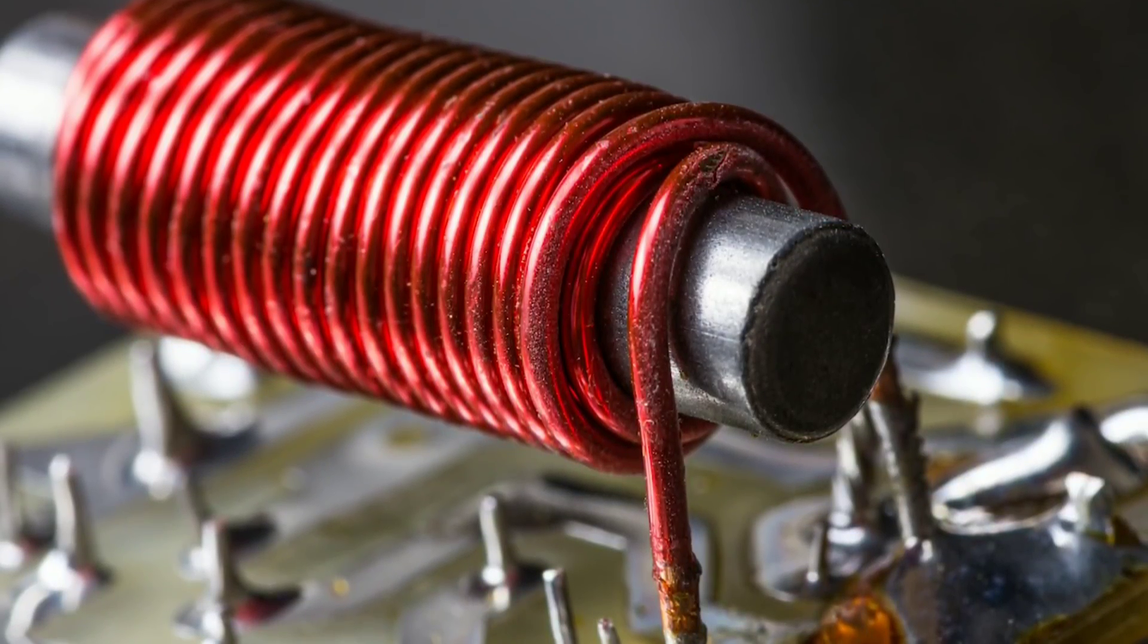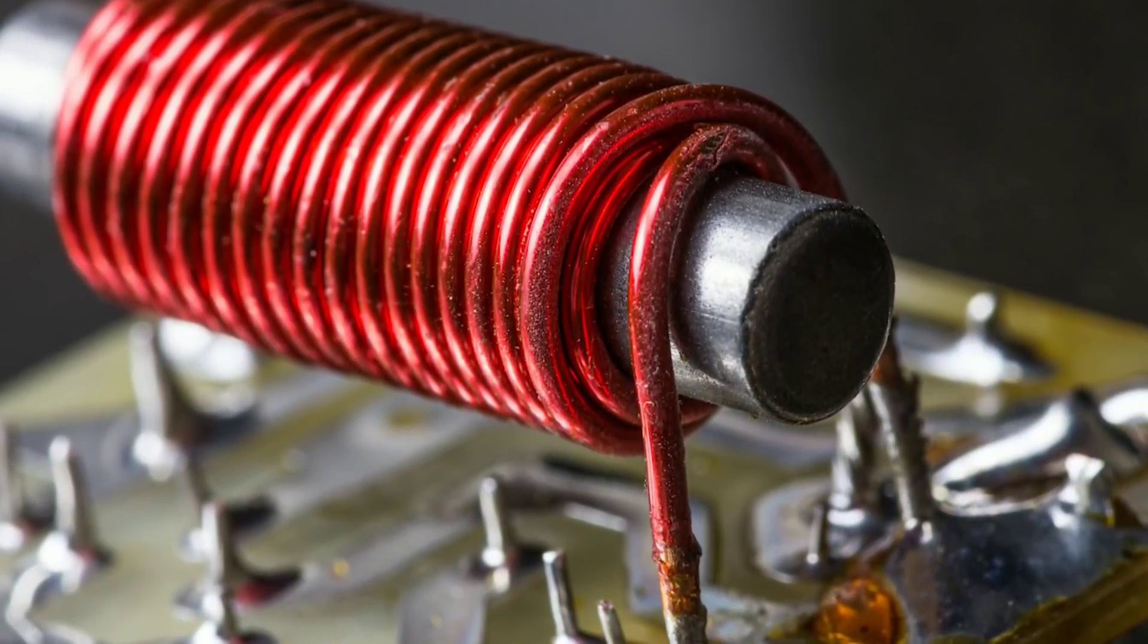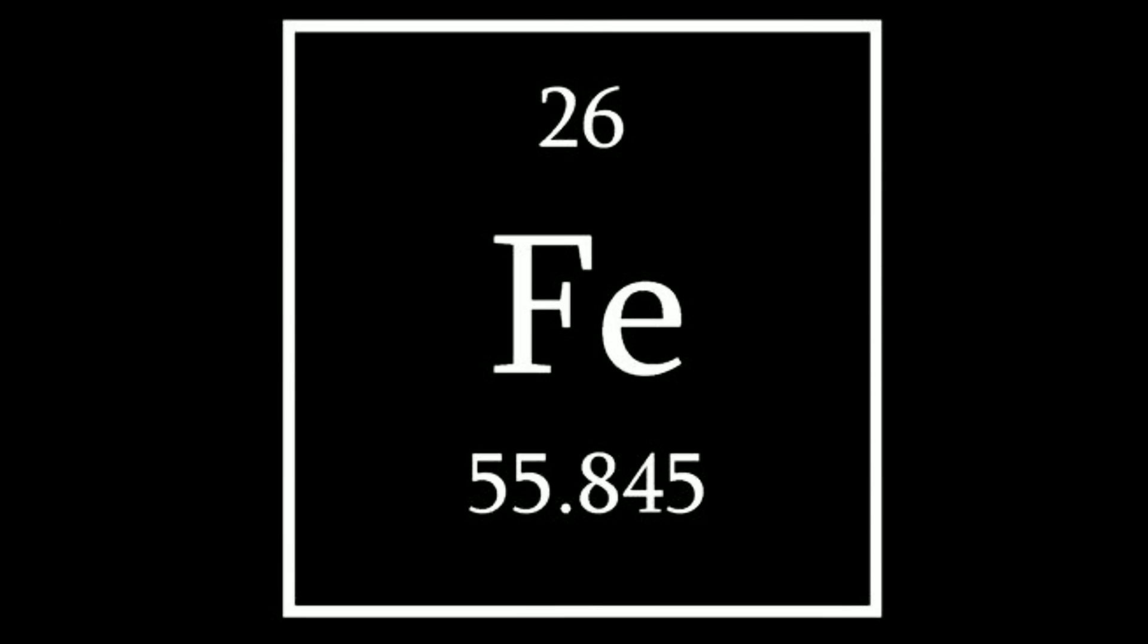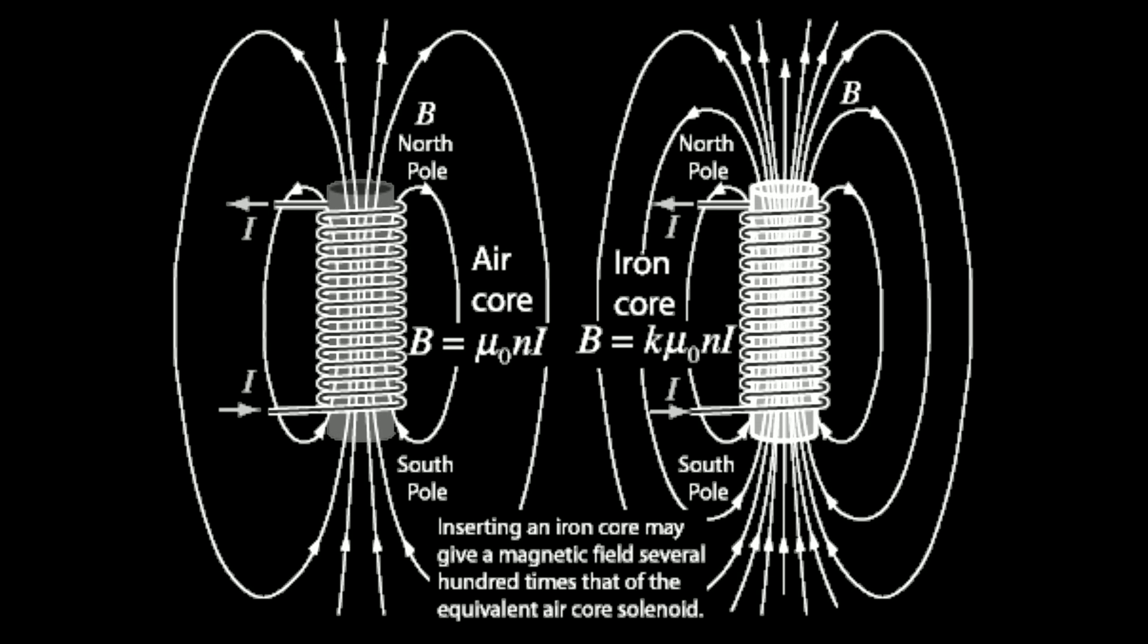To make a strong electromagnet, you wrap a long piece of insulated copper wire around a magnetic core. Iron is great for this. With a magnetic core, the strength of the magnetic field is much higher.